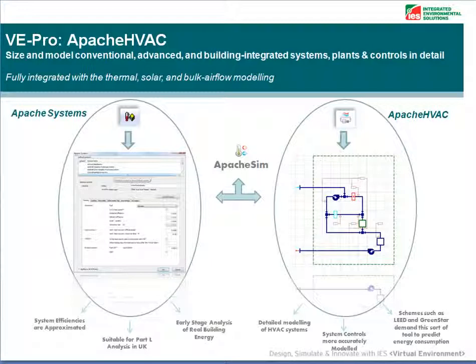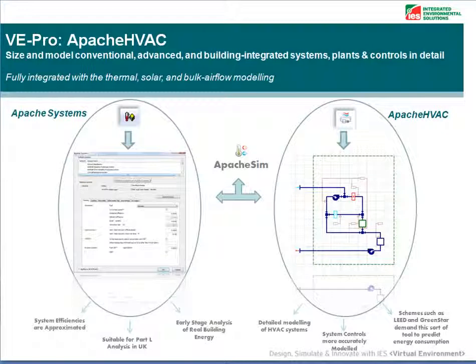Later in the design process you will need to model your plants in more detail. As the nature of contracts change to include a penalty if the building exceeds its predicted energy figure, there is more demand for Apache HVAC to produce a more accurate energy figure. Also, schemes such as LEED and Greenstar demand this sort of tool to predict energy consumption for systems and equipment in more detail than Apache Systems can provide.